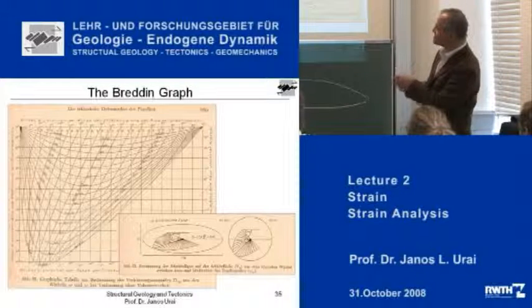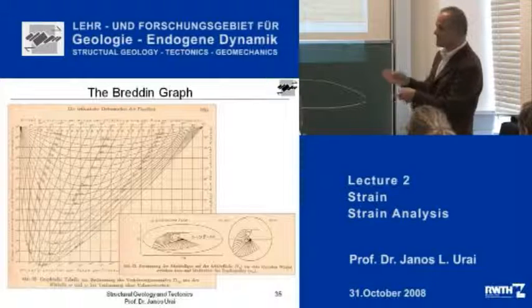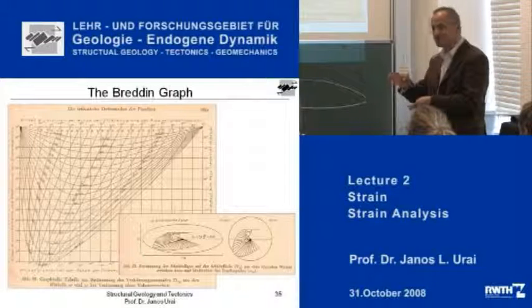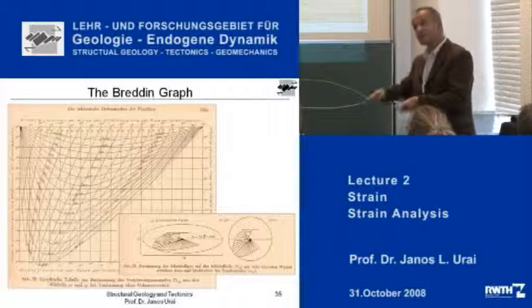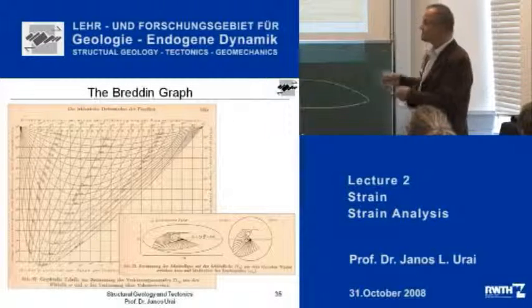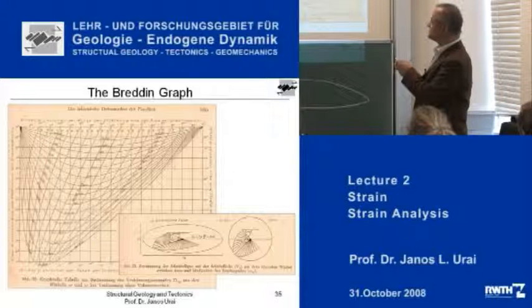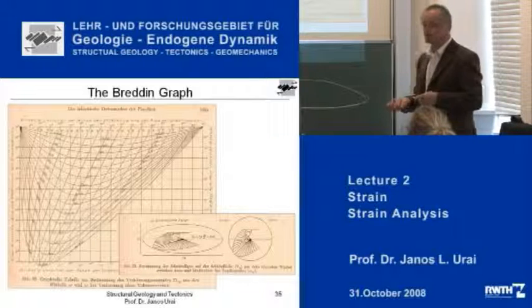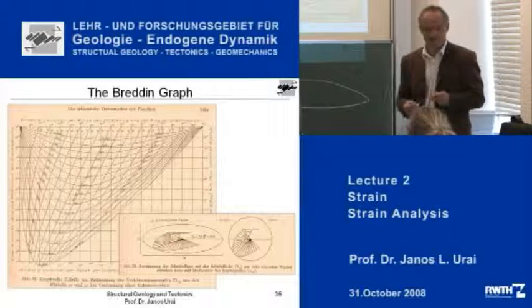If you have a very strongly flattened ellipse, then the angle of shearing changes very quickly, then it goes back to 90 degrees. If the ellipse is not so strongly flattened, then you have a much much smaller change.